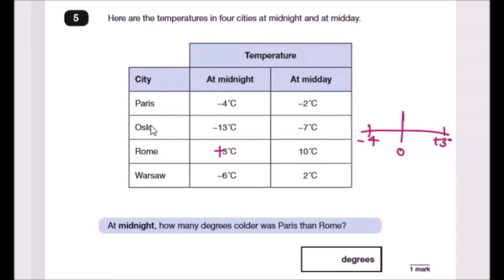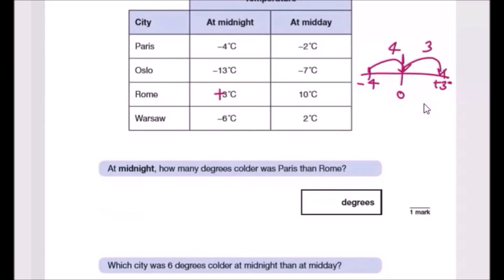What I do is always call this one zero, so it takes exactly four degrees to get to zero and another three degrees to get to positive three. So the total distance, the total change, is seven. Four plus three is seven.